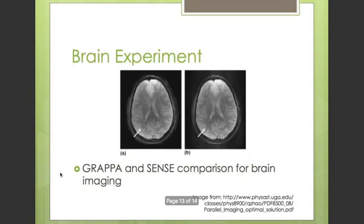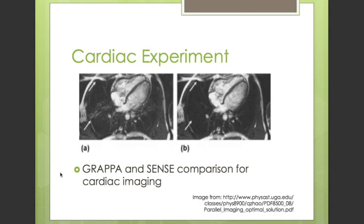The image on the screen represents an experiment imaging the brain using two different reconstruction methods, SENSE and GRAPPA, with four coils and a reduction factor of four. The SENSE image shows inhomogeneous noise distribution as previously seen in phantom experiments, while the noise distribution on the GRAPPA image is more homogeneous. However, aliasing effects and artifacts are more visible on the GRAPPA image. A separate cardiac imaging experiment shows the SENSE image with a reduction factor of two has some visible artifacts, while the GRAPPA image shows no visible artifacts.